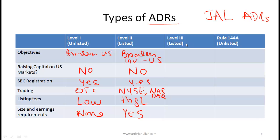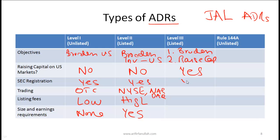Level 3 ADR is the most complex. Here the objectives are twofold: to broaden the investor base and to raise capital. The company actually issues new shares as ADRs, so new shares are created and ADRs are issued against those newly created shares, making this a mechanism for raising capital. SEC registration is required, these shares trade on major exchanges like the NYSE and NASDAQ, listing fees are high, and size and earnings requirements apply.